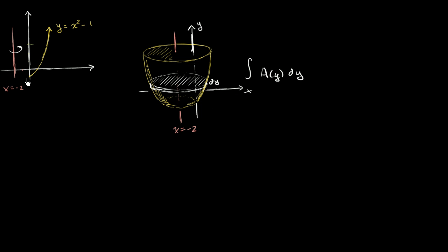And in this case, we're going to integrate from y equals negative 1, where it hits the y-intercept, all the way to y equals 3. That's going to give us the volume of our upside down gumdrop-looking thing.